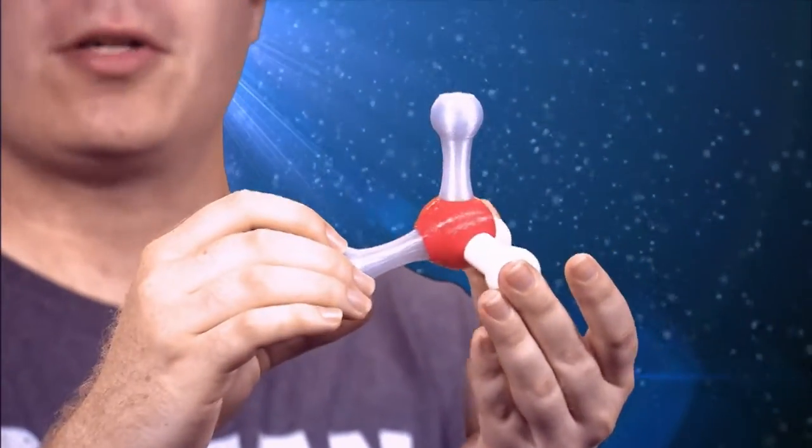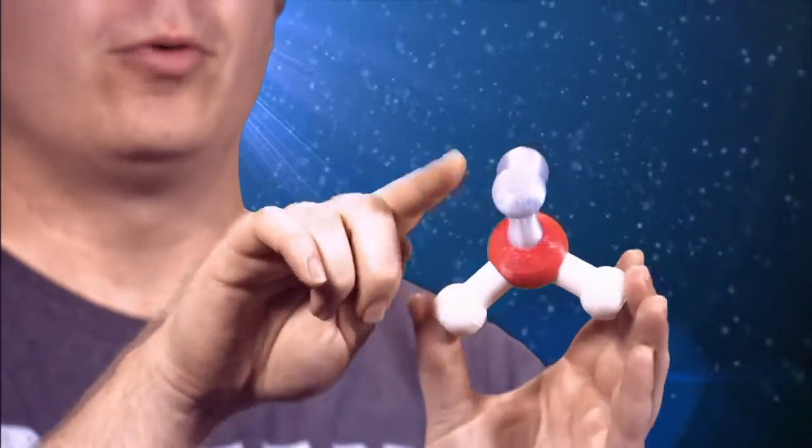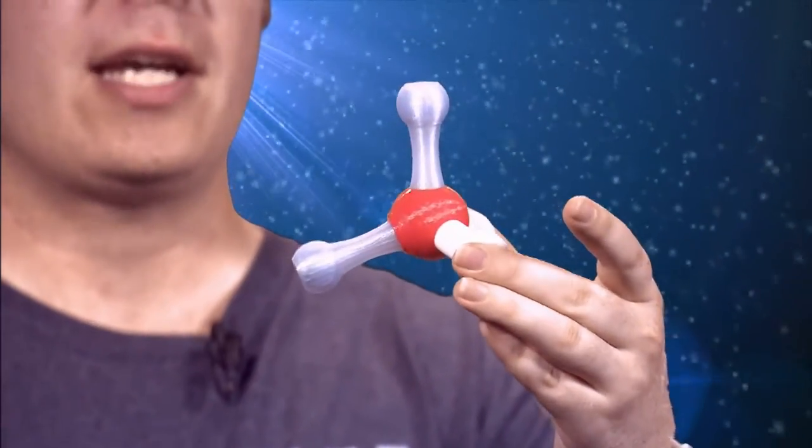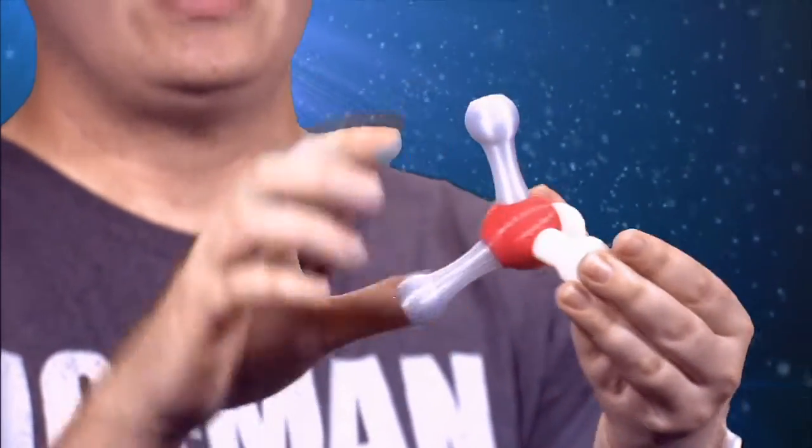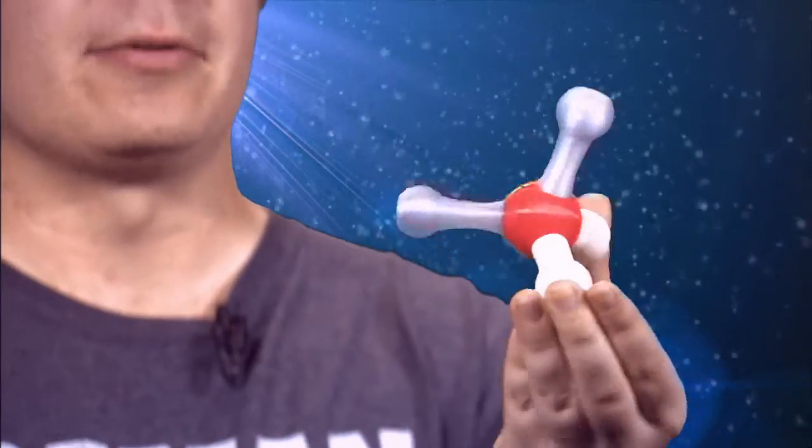We have what's called a tetrahedral geometry. There are four basic spokes that come out. Two of them are bonds to hydrogen atoms from oxygen, and the other two are lone pairs sticking out right here.